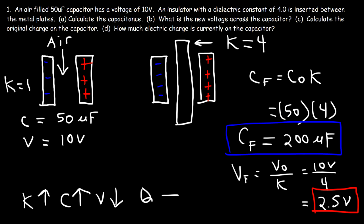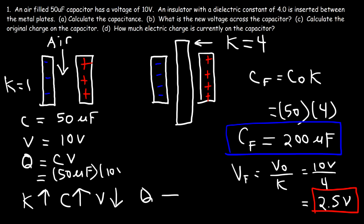Now let's move on to part C: calculate the original charge on the capacitor. Electric charge equals C times V. The original capacitance was 50 microfarads, and if we multiply that by 10 volts, 50 times 10 is 500. Keeping the unit microfarads, we get microcoulombs. So the charge on this capacitor is 500 microcoulombs — that's the original charge.